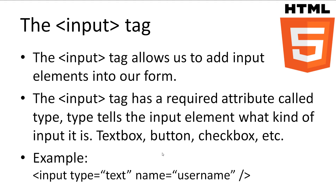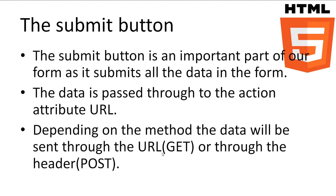In the example here, we have a text field that might be used for a username. The Submit button is a special input type that appears as a button. It tells the browser to submit the data in the form to the page specified in the action attribute. Depending on what we specified in the method attribute, the data will either be sent through the URL — which is called Get — or hidden through the header of the web request, which is called Post.